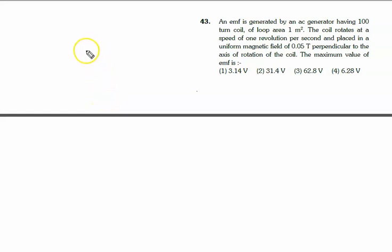An EMF is generated by a generator having 100 turns with a coil of loop area one meter square.